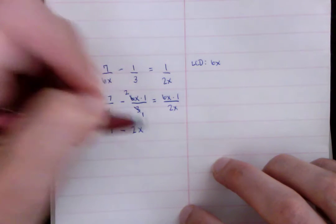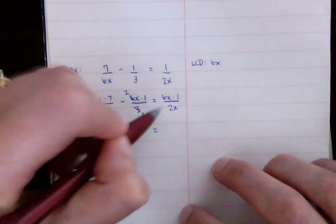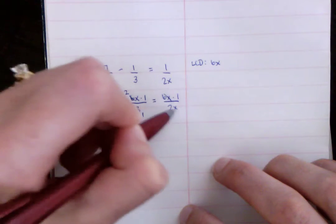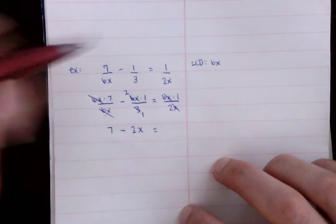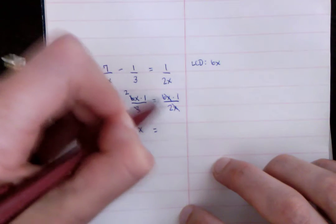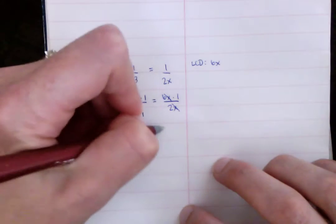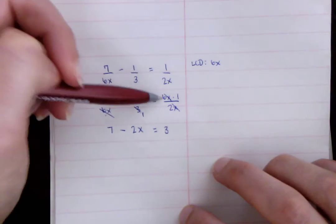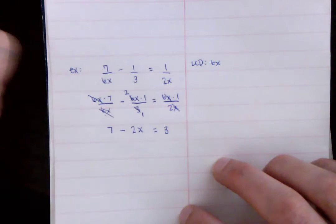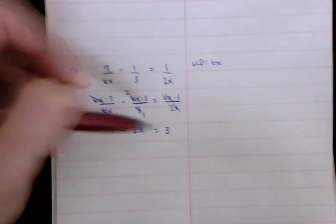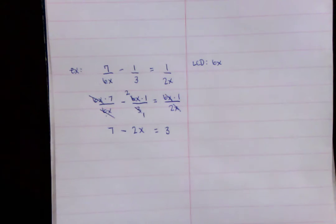So we just got rid of the fraction there, and then here, the X is canceled. And then we know, again, this reduces to 3. 6 divided by 2 is 3. And again, we have the 3 here times the 1, so it ends up being 3. So there's our equation, which is really nice. We just got rid of all the fractions, and I love this method.